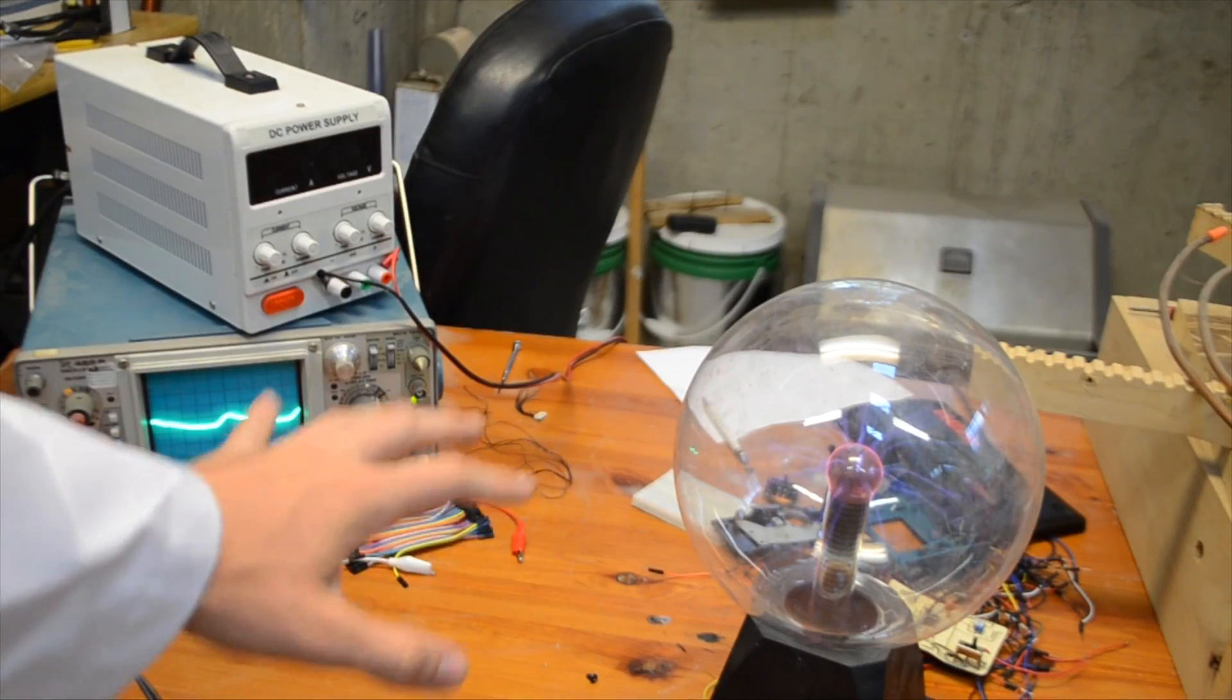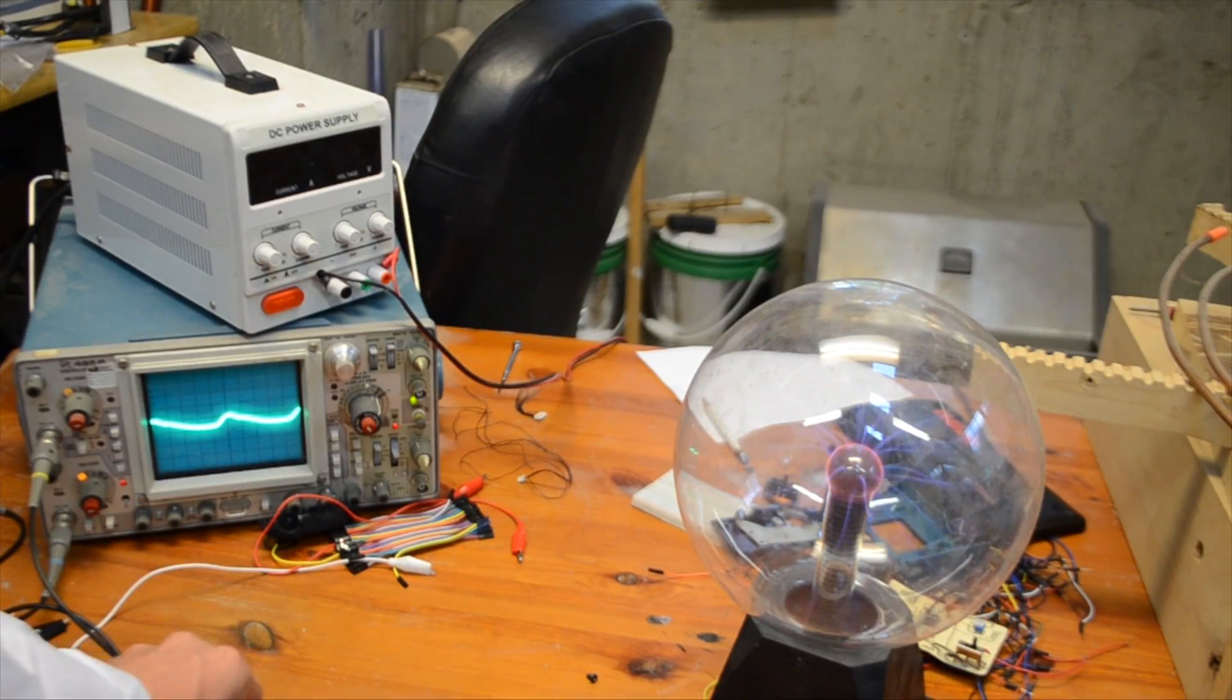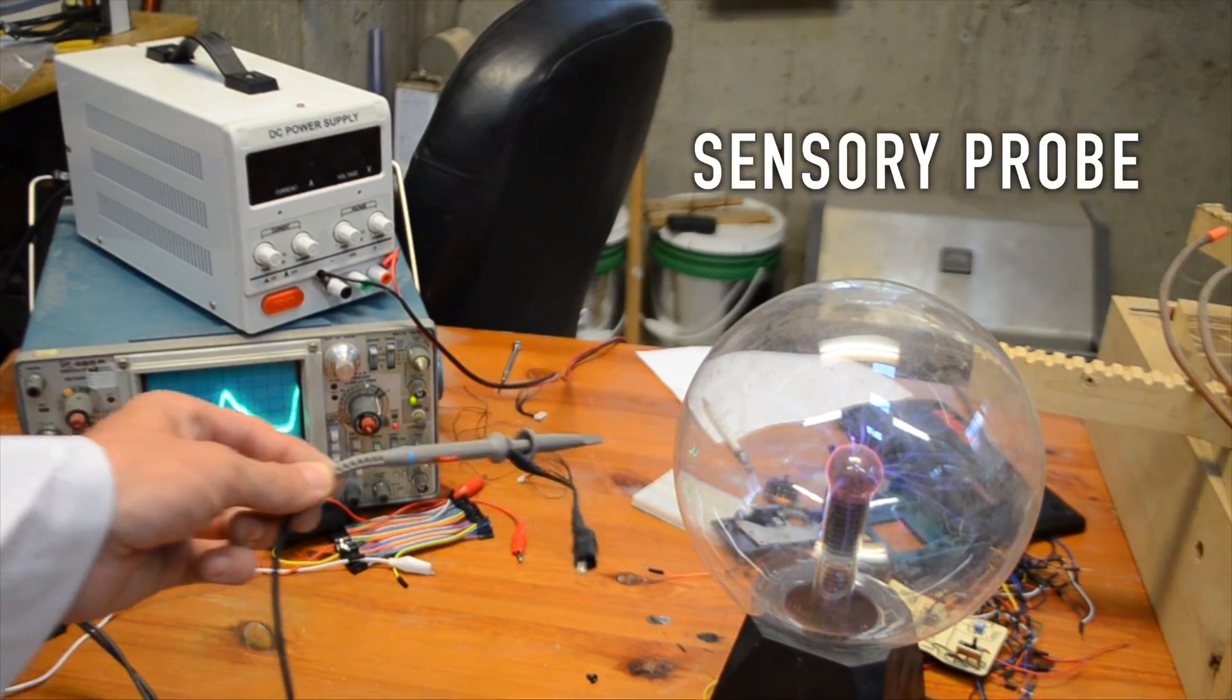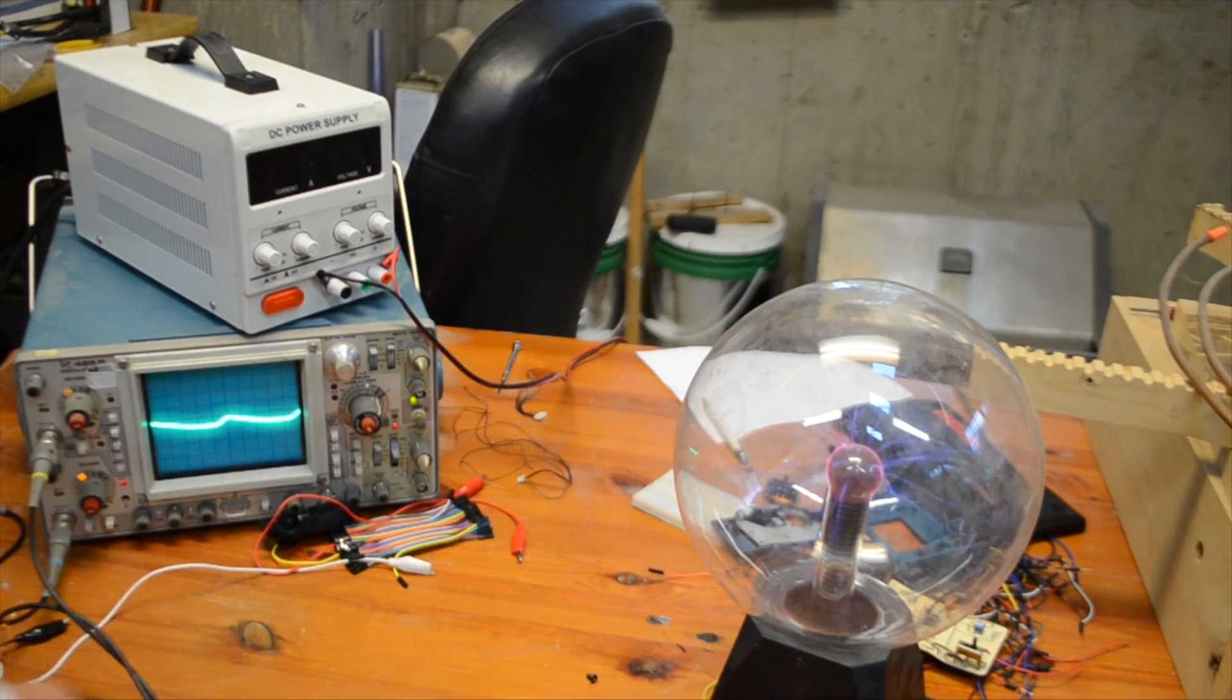So probably the first thing we can do to understand how this data is being transferred from the plasma globe to the radio is look at how it's happening on an oscilloscope. First off, note that here on my oscilloscope you can see a wave pattern, and when I bring this closer you can see the amplitude of the wave rises.